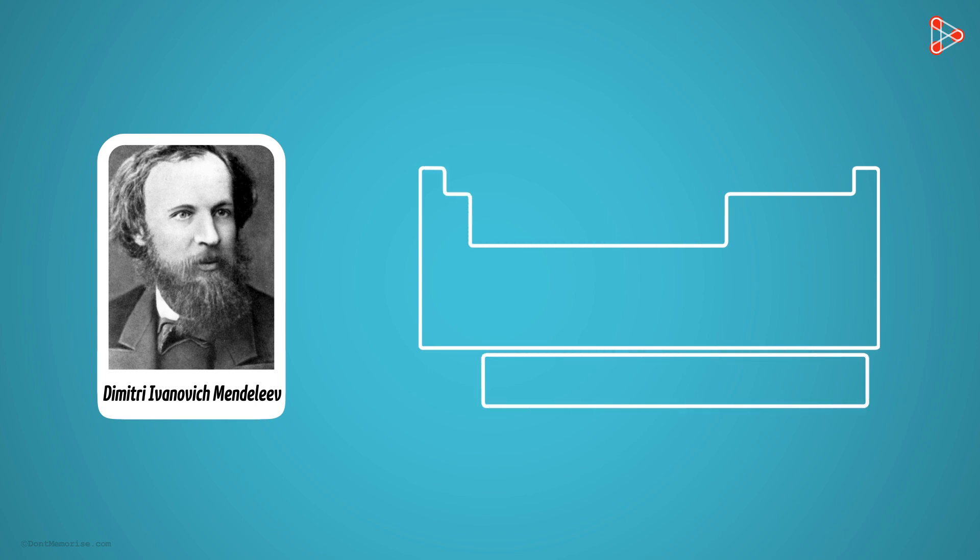So in this video, let's dedicate some time to understand what and how Mendeleev actually worked on. When Mendeleev began his work of grouping the elements and arranging them, there were almost 63 elements known to him.